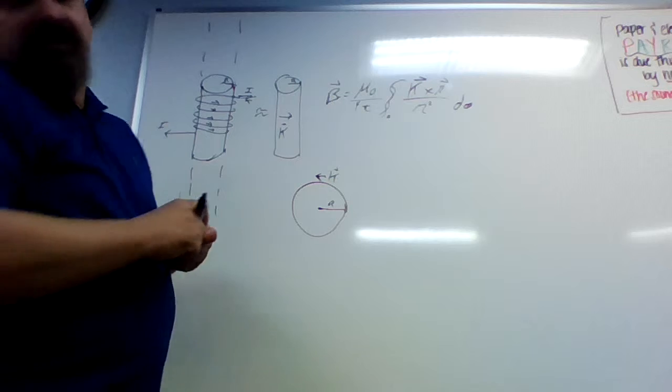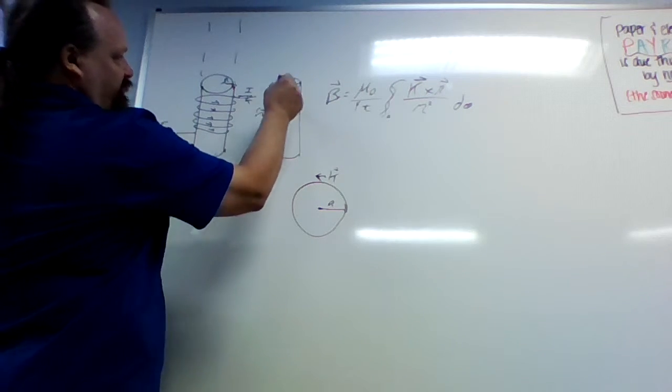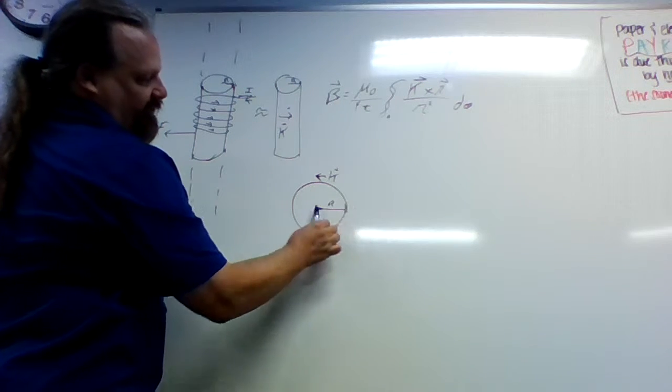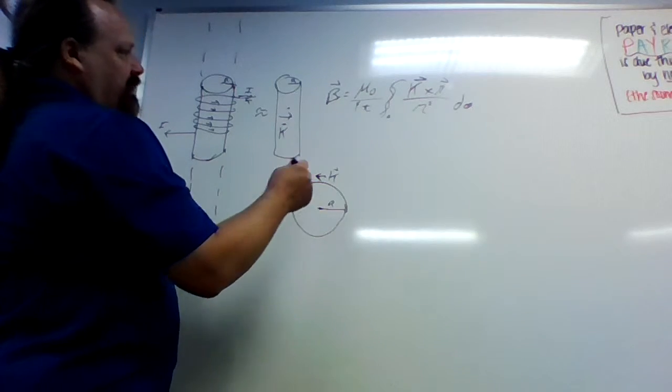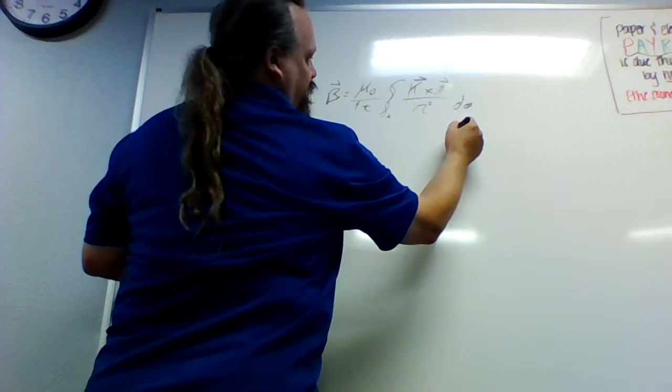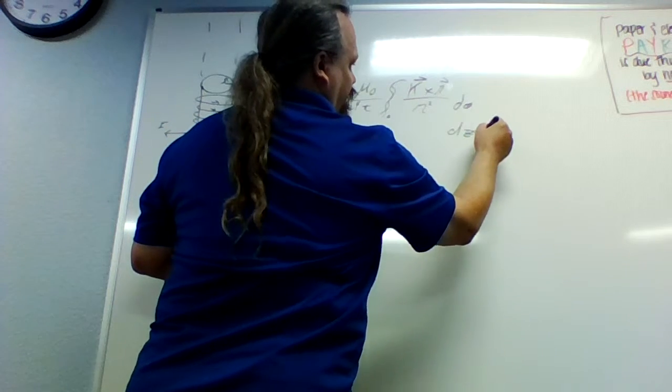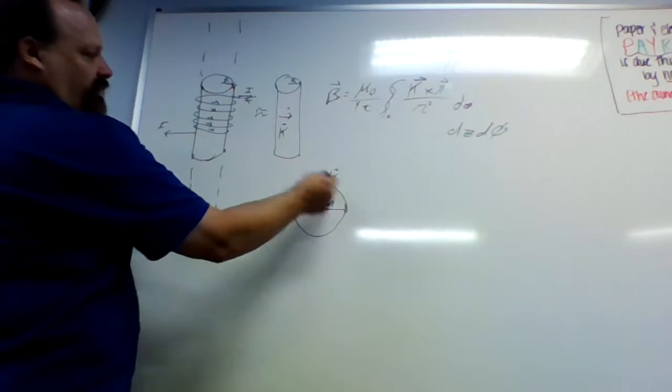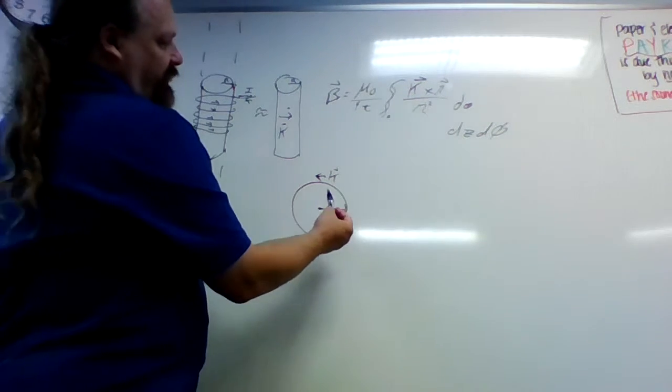And so we're going to have two parts of integration from our point inside the solenoid. The first is to the area of the direction of the circumference. So this dA is going to be effectively dV and dV, where V goes around the cylinder.